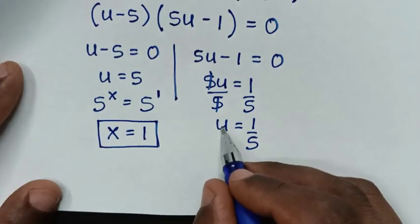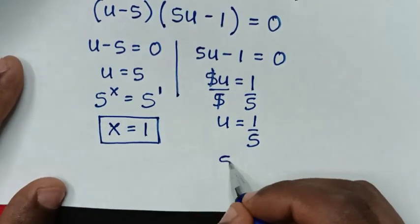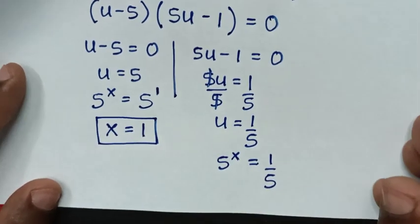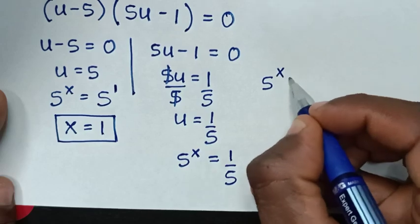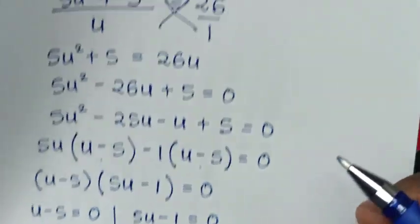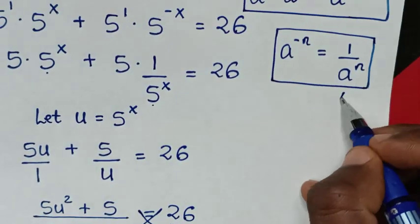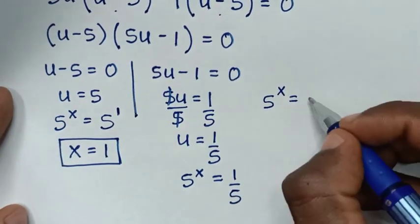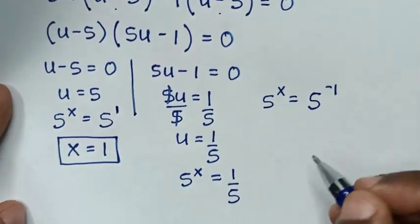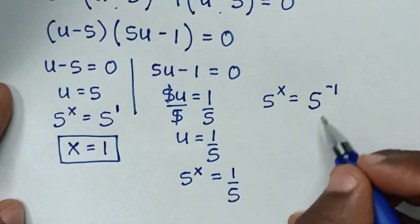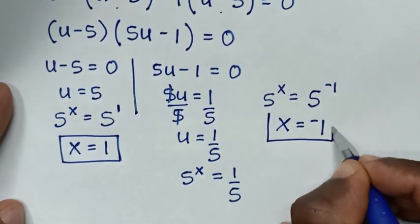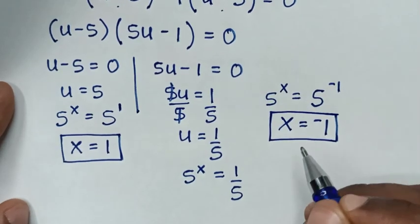From the second solution, u equals 1 over 5. Since u equals 5 power x, we have 5 power x equals 1 over 5. Now 1 over 5 is the same as 5 power negative 1. We have the same base, so comparing the powers gives x equals negative 1. This is the second value of x.